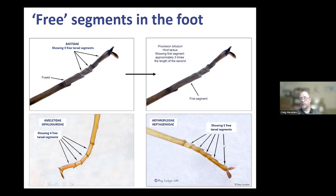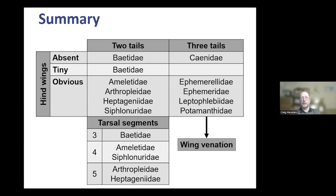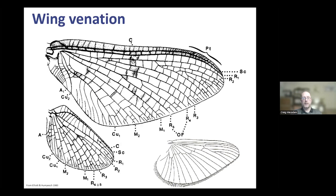The summary of the identification approach: look at number of tails first, then type of hindwing, then split choices into groups. For two-tailed species, look at tarsal segments to split further. For three-tailed species, you need to look at wing venation. A typical mayfly wing has lots of cross veins and longitudinal veins — there are also intercalary veins along the wing margin that are important: single intercalaries versus double intercalaries is important particularly in Baetidae. The Caenidae have really reduced venation.